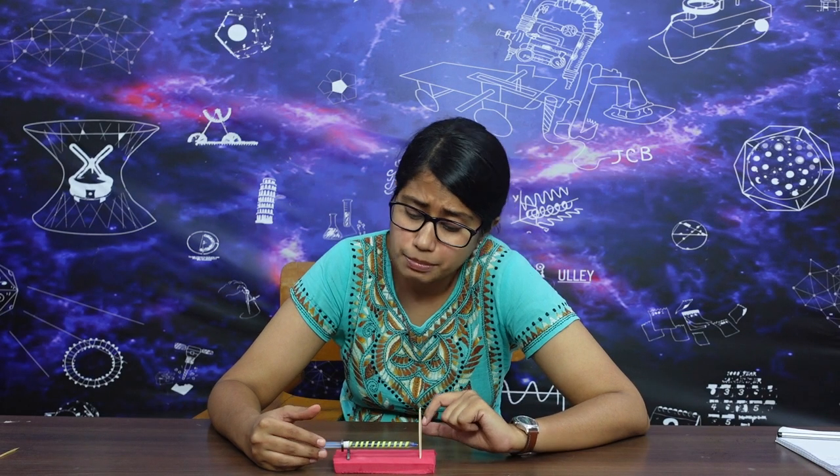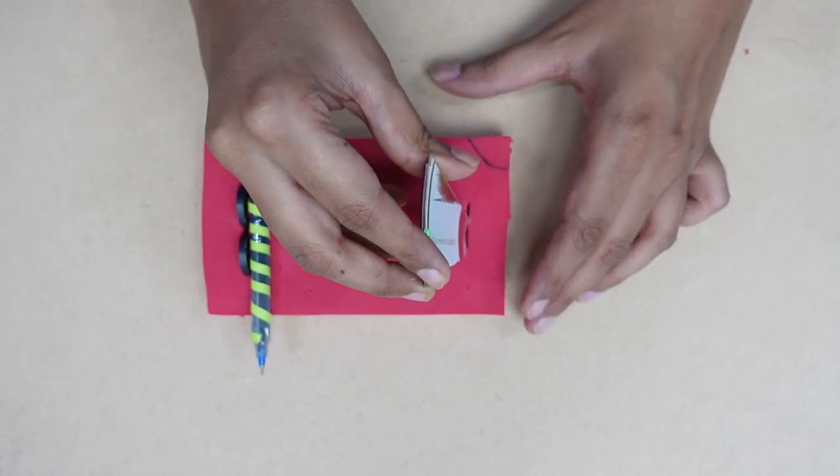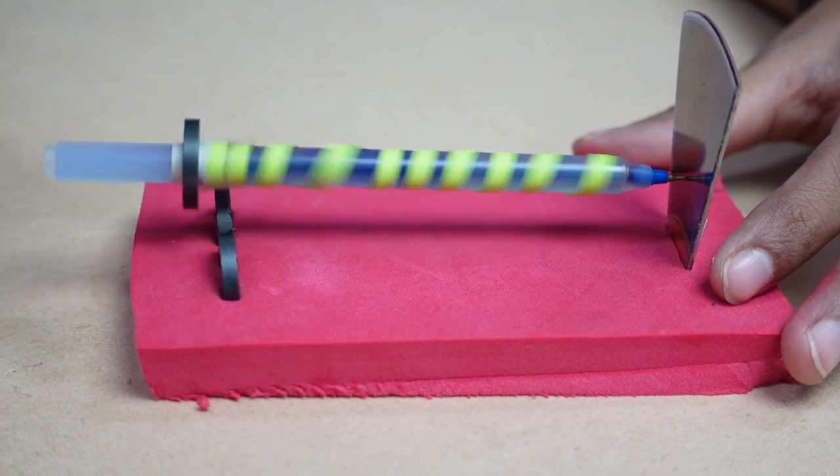Now the pen is floating in the air and we can spin it as well. The pen spins so long because the friction is very low between the ice cream stick and the pen. If we replace the ice cream stick with something like a CD or plastic, the pen will spin even longer.